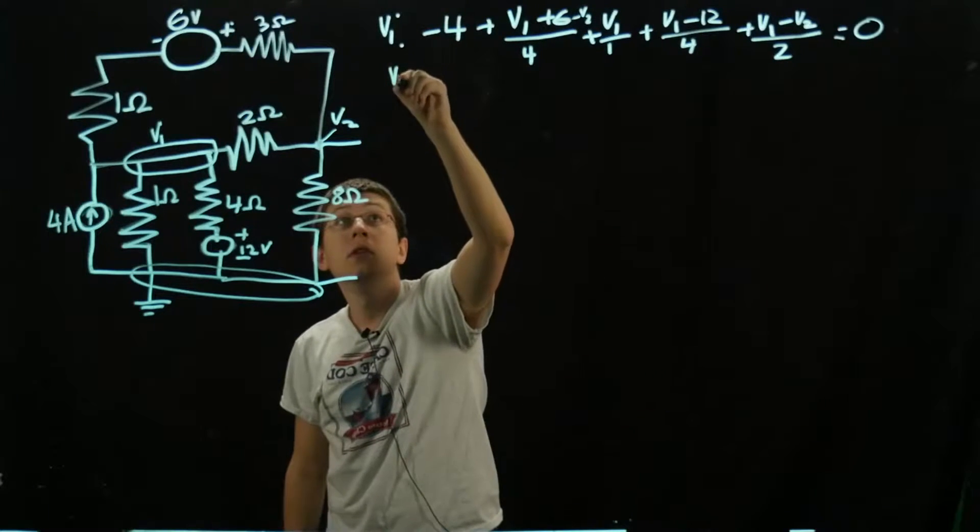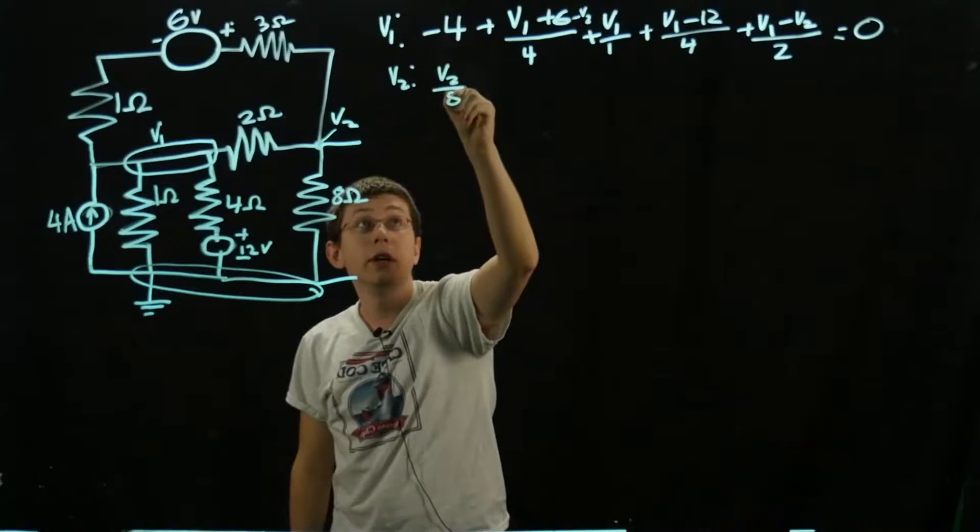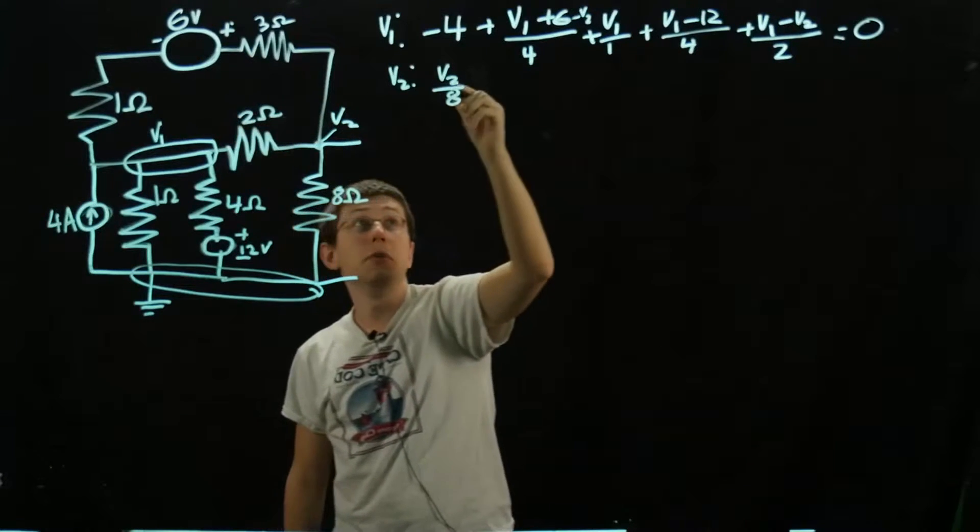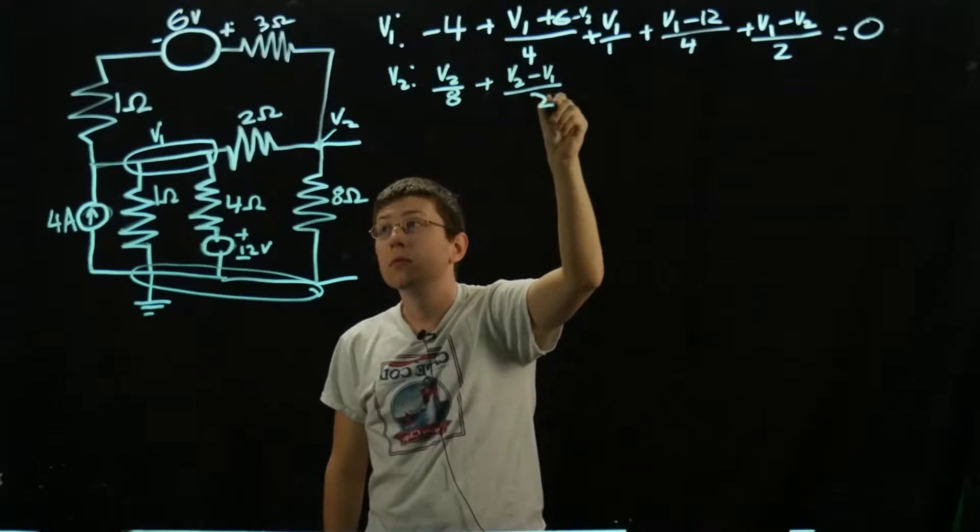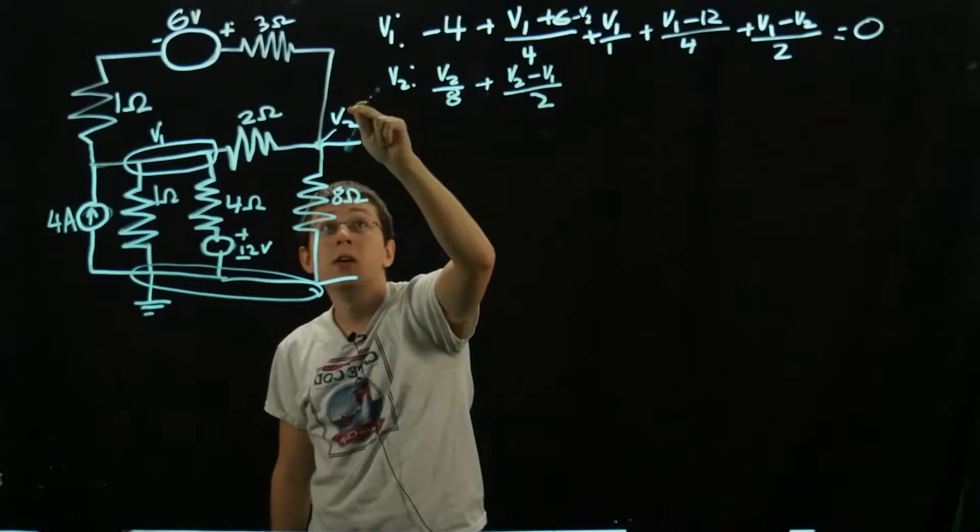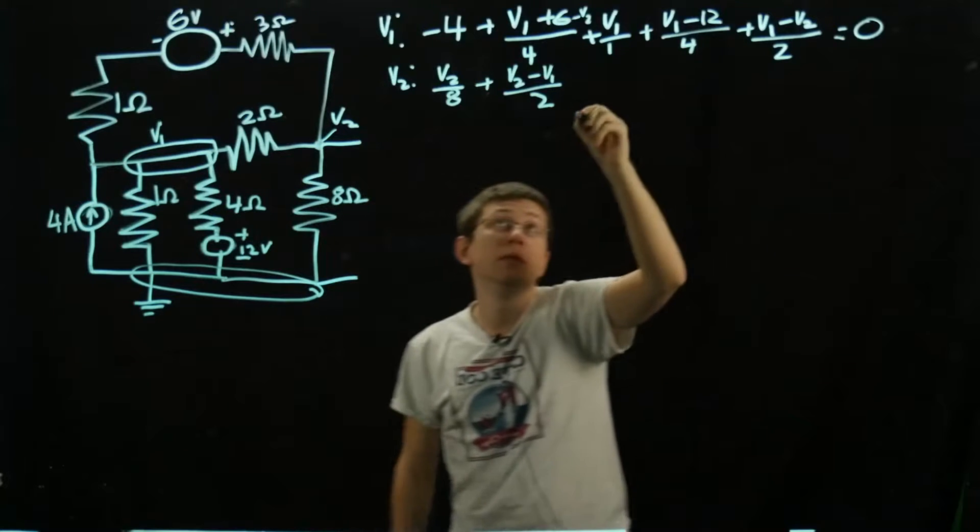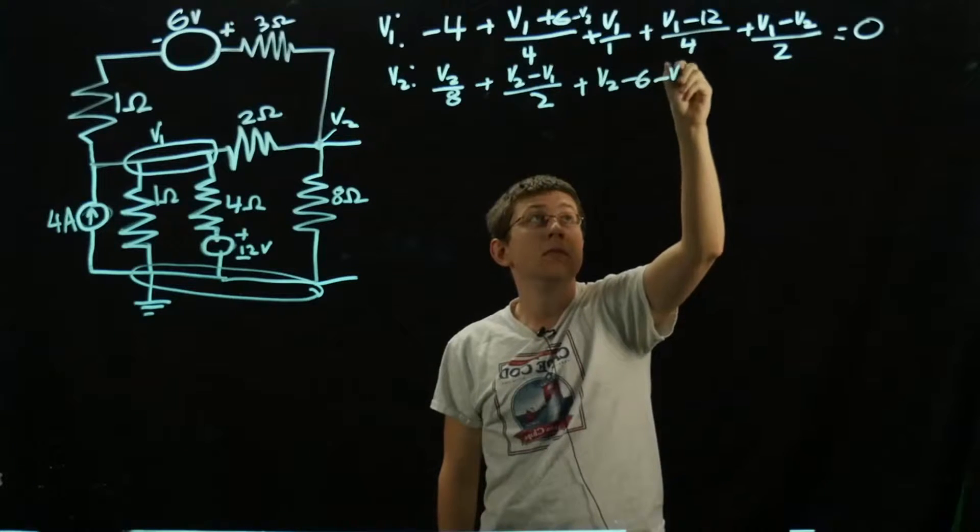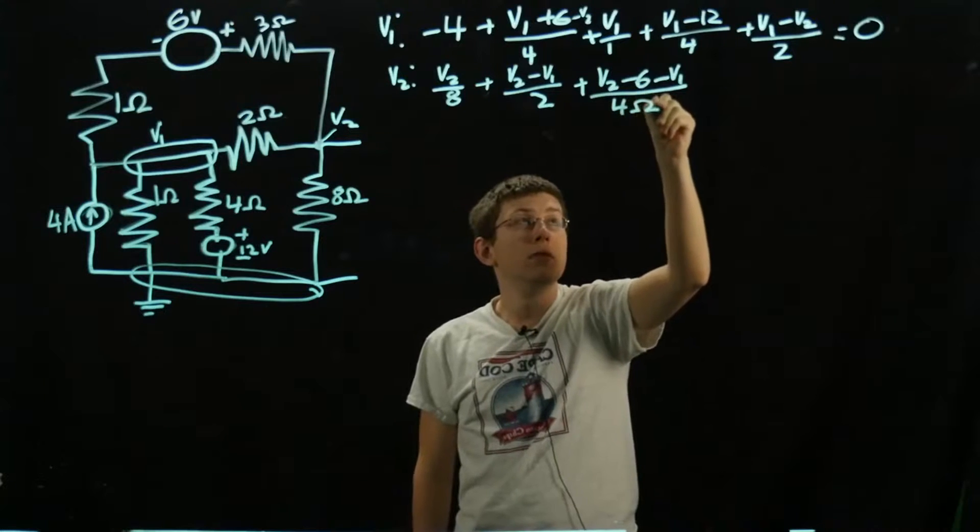Now for V2, it's a bit simpler. We have V2 over 8 because of this branch here, V2 - V1 over 2, and same deal as before, we'll have (V2 - 6 - V1), which is the same as before, all over 4 ohms.